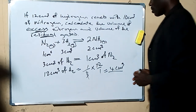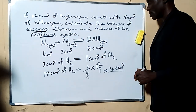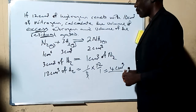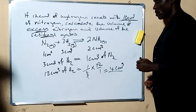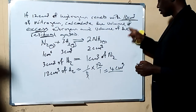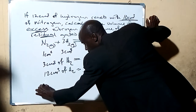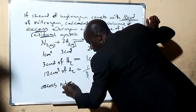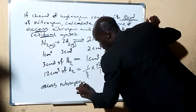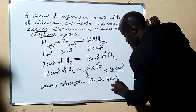So the volume of nitrogen that will react with 12 cm³ of hydrogen is 4 cm³. But we have 10 cm³ of nitrogen available. That means we have an excess of nitrogen. To calculate the excess nitrogen: 10 cm³ minus 4 cm³ gives us 6 cm³.